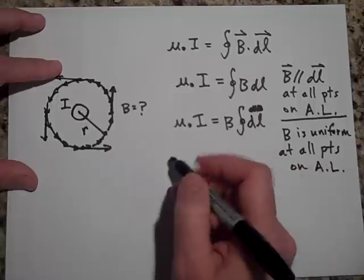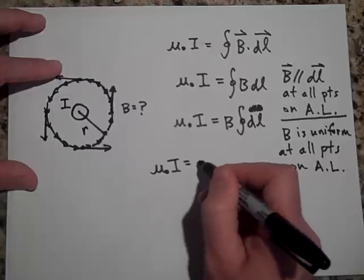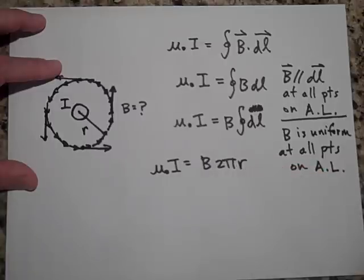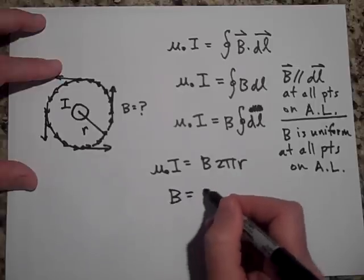And then I'm going to add up all those dls, then I get that it's B times 2πr. Okay, let's bring the 2πr on the other side.